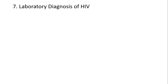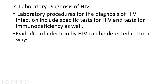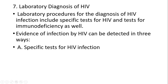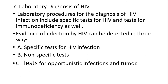Laboratory diagnosis of HIV: laboratory procedures for diagnosis of HIV infection include specific tests for HIV and tests for immunodeficiency. Evidence of HIV infection can be detected in three ways: first, by specific tests for HIV infection; second, by non-specific tests; and third, by tests for opportunistic infections and tumors.